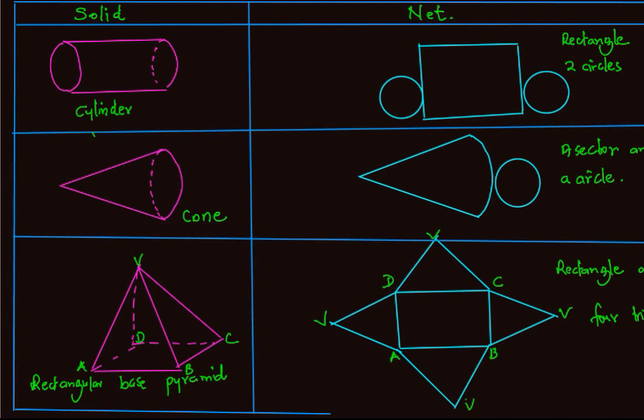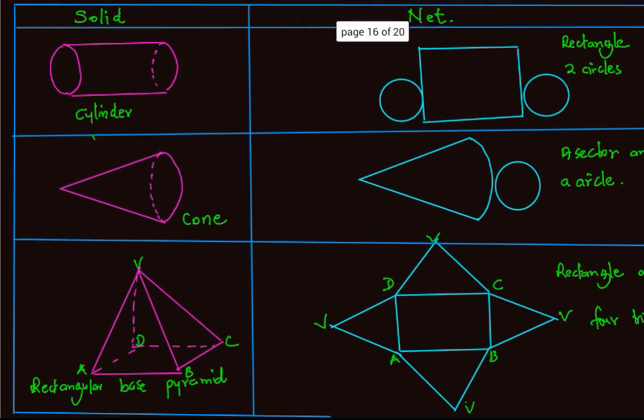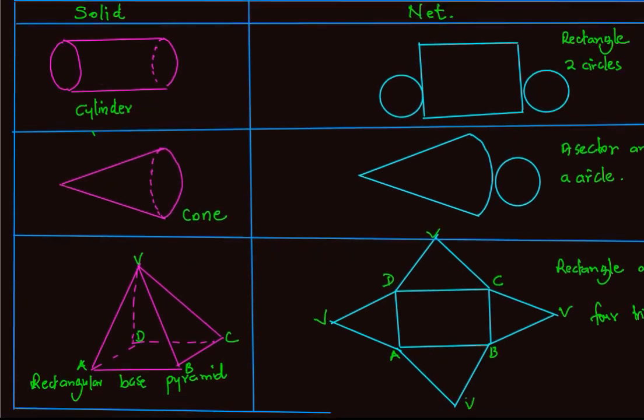We may also have a rectangular-based pyramid. For a rectangular-based pyramid, its net will be made up of four triangular faces and a rectangle, where the rectangle will be its base.